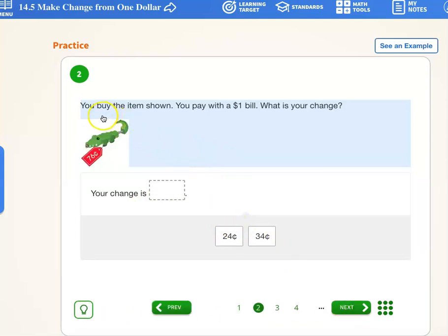Let's go to our next one. You buy the item shown. Well, here it is. You pay with a $1 bill. What is your change? How much does it cost? 76 cents for this little alligator right here. You buy the item shown. You pay with a $1 bill. What is your change? Alright. Well, let me see if I can help you out with that.